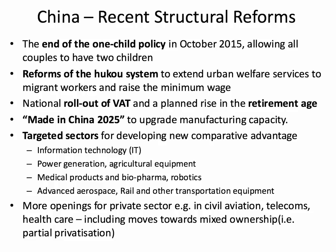Here are some examples of key reforms that have been put in place or are being mooted going forward. Perhaps the best known is the end of the one-child policy in October 2015, allowing all couples to have two children, which will clearly have some effect over time as fertility rates change. The HUCU system, which limits labour mobility in China, will be reformed to extend urban welfare services to some migrant workers. China has started a national rollout of VAT to be paid by businesses to broaden the tax base, which might allow more spending on healthcare or education. There's also a planned rise in the retirement age as a response to the demographic challenge.